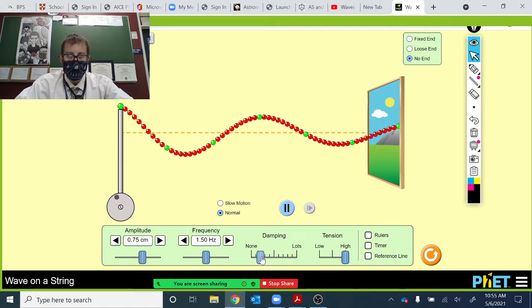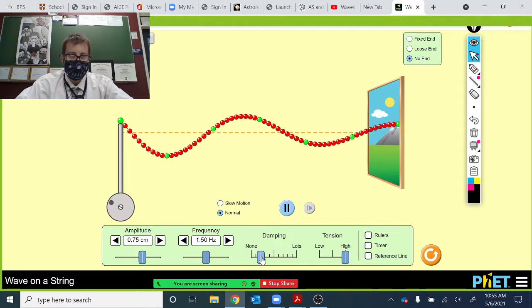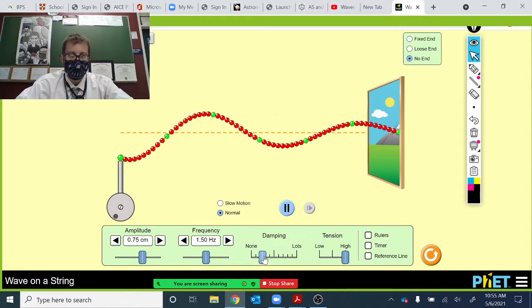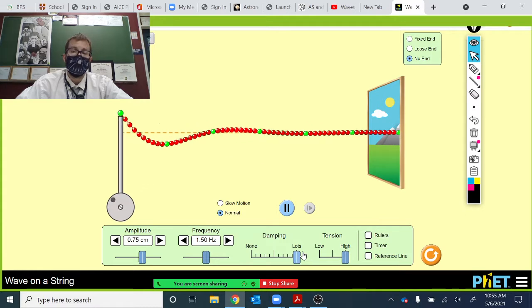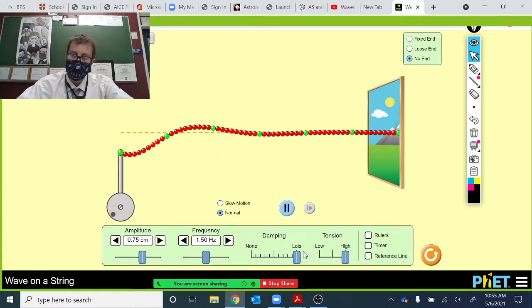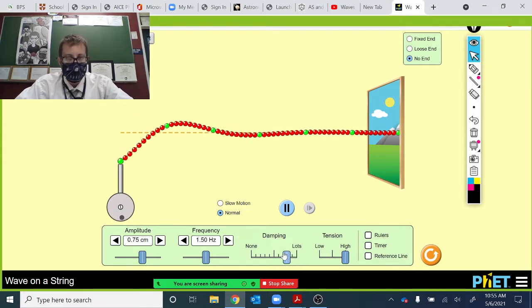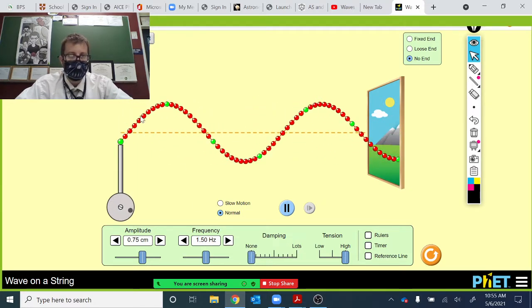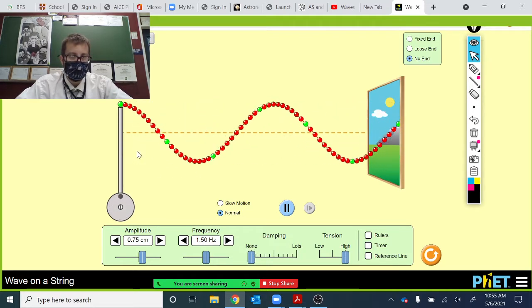Damping is the energy losses that occur from left to right. You can see if there's lots of damping, then the energy losses are going to be a lot. But if you've got no damping, then the energy that is in the wave here is maintained.